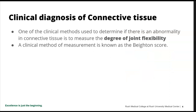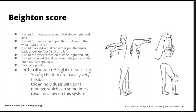One of the clinical methods used to determine if an individual has an abnormality in connective tissue is to measure the degree of joint flexibility. This is known as the Beighton score — a clinical exam used to determine flexibility, and there are nine points in the Beighton score.